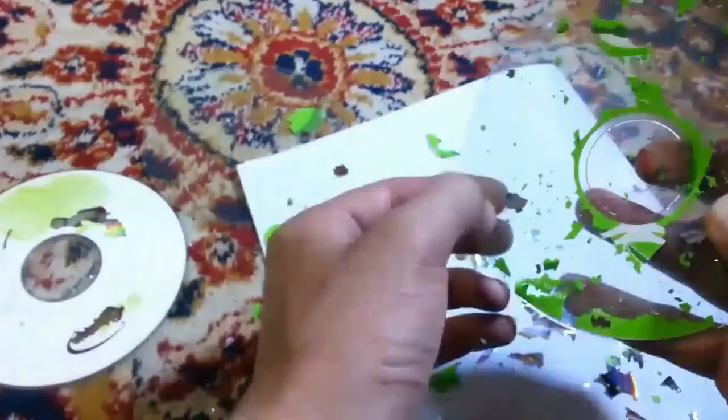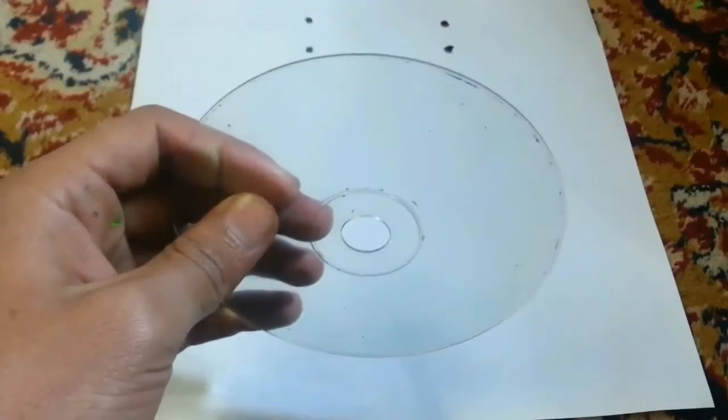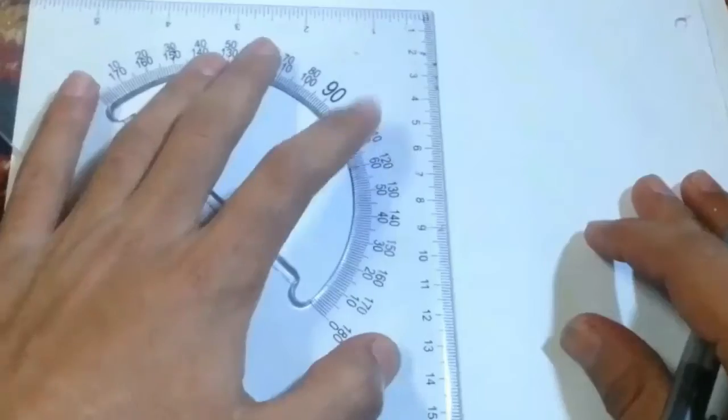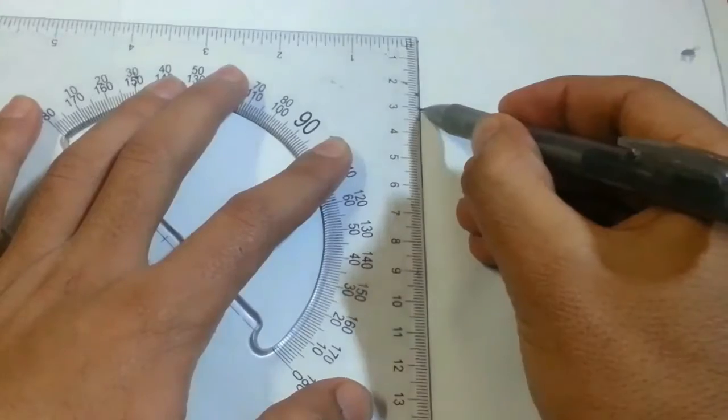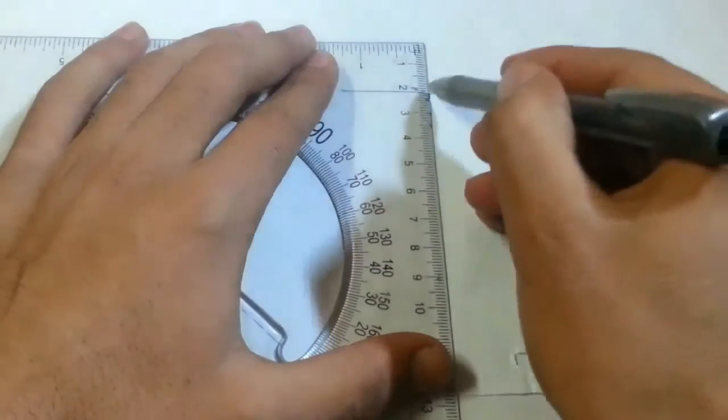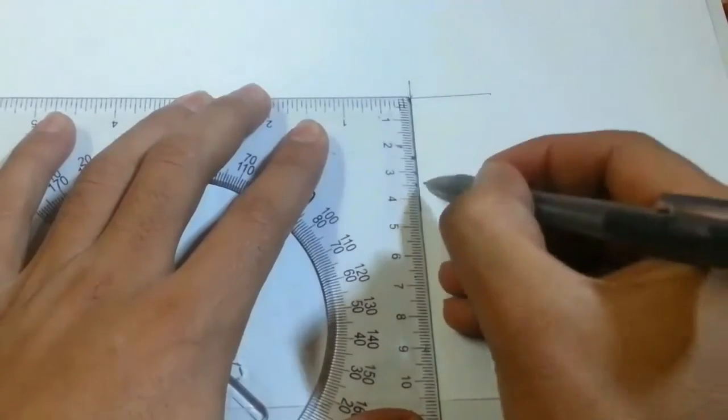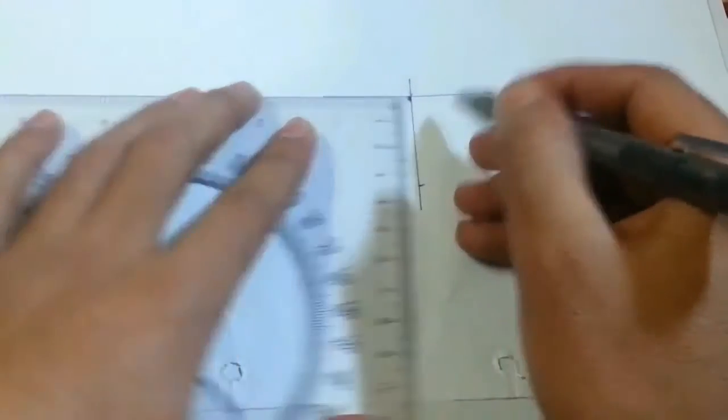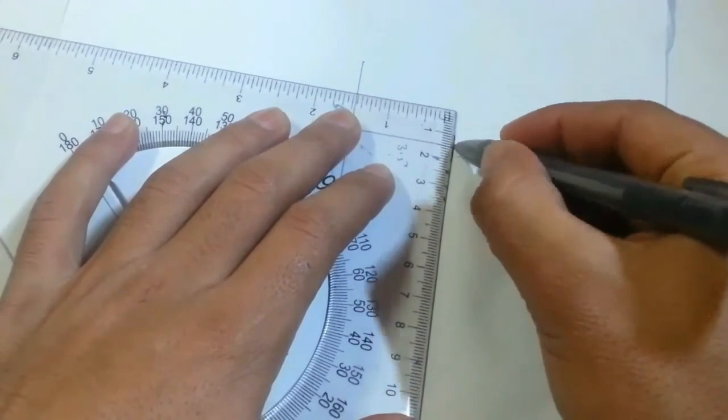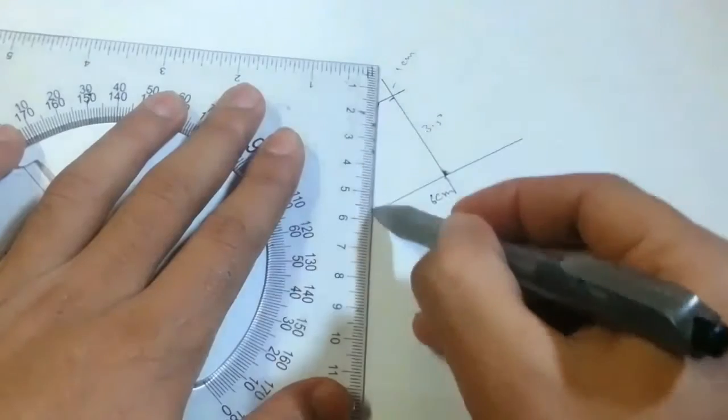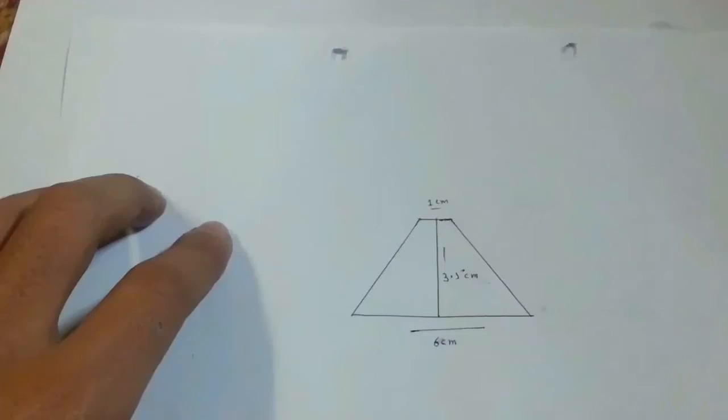Once we got the CD transparent, now let's draw a cutting shape for it. First of all, draw a 6 centimeter line and find that line at 3 centimeters. Draw a perpendicular line and find that at 3.5, and a 1 centimeter line parallel to the first one. Now connect both lines so now we got the shape at 6 centimeter, 3.5 centimeter, and 1 centimeter of length.